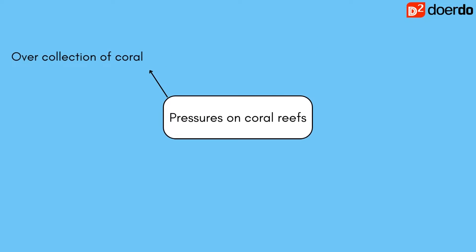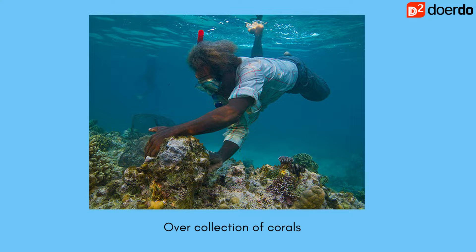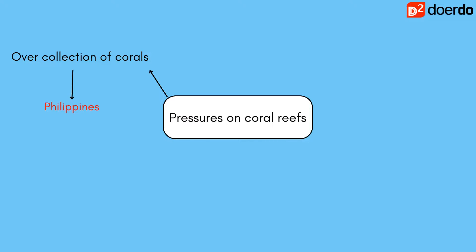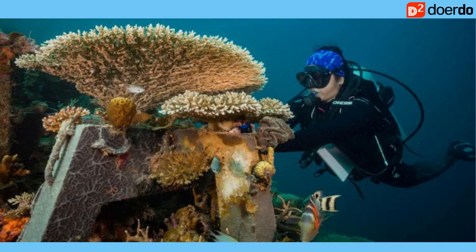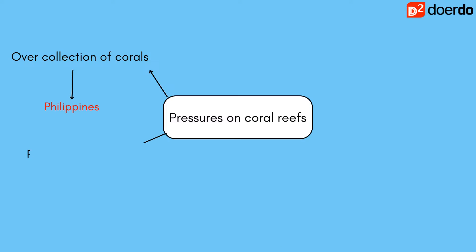The first threat is the overcollection of corals for personal use or for sale. Overcollection weakens and disrupts the ecosystem. For instance, the Philippines attracts a large number of tourists every year. Coral colonies are threatened by souvenir collection from divers, and shallow reefs can be trampled by such visitors.